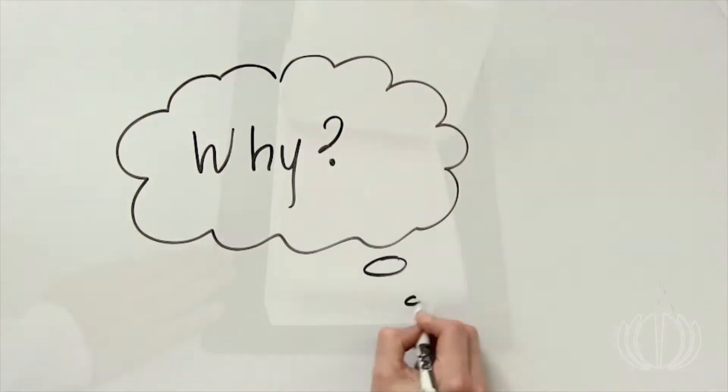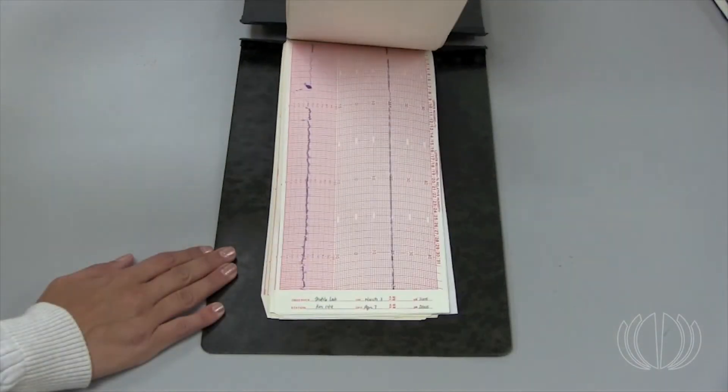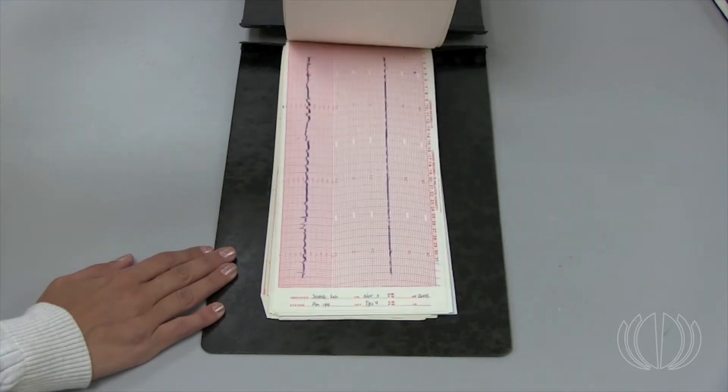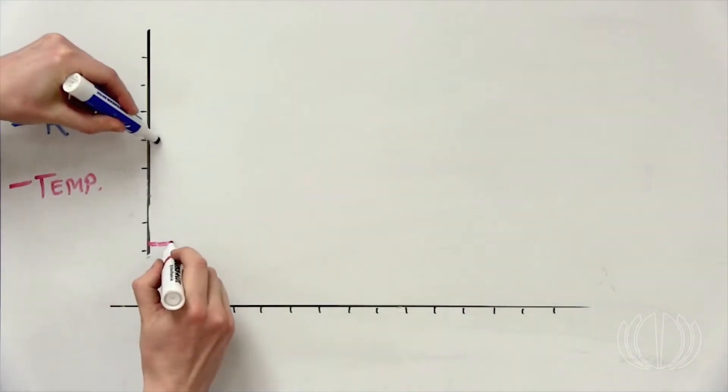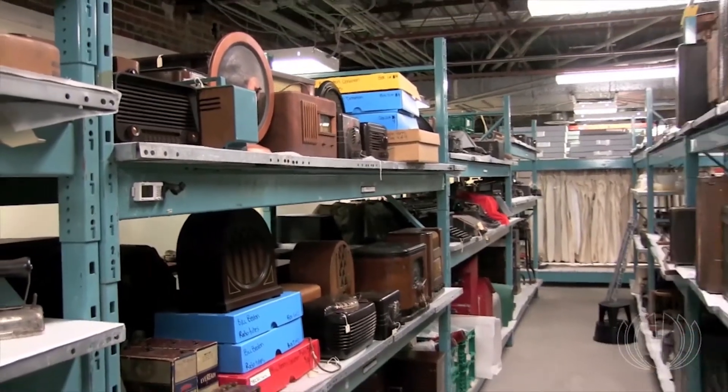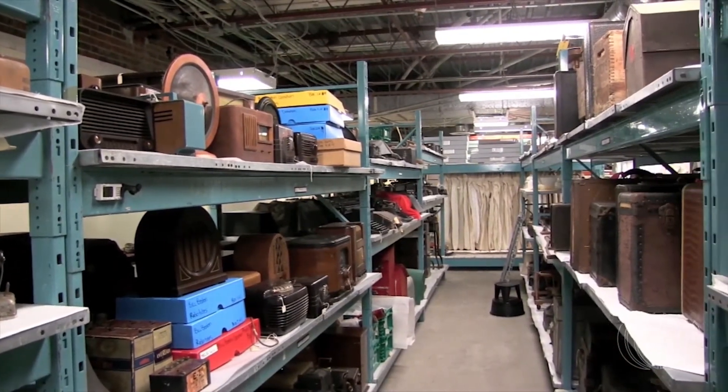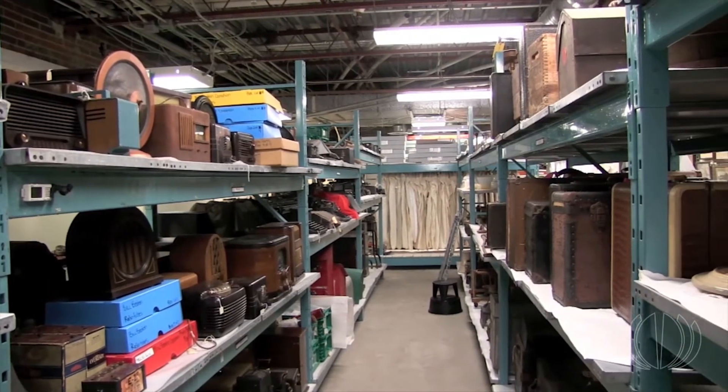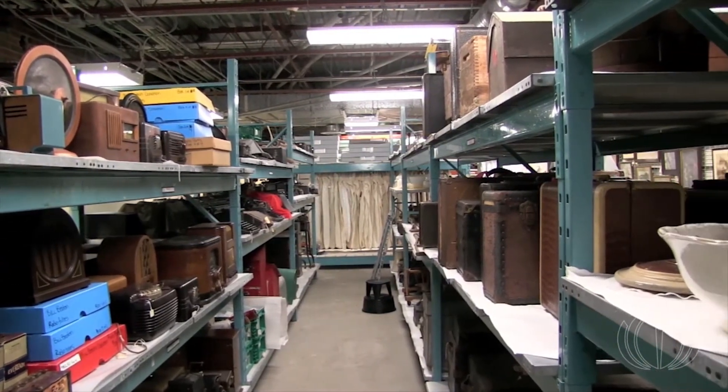You may have wondered why you're collecting all this data on temperature and relative humidity. The answer is that both temperature and relative humidity, or RH, affect the preservation of objects in your collection. So it's important to have a good understanding of your facility's climate to help you make good decisions for your collection.